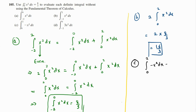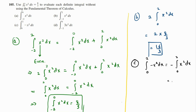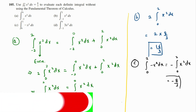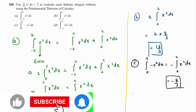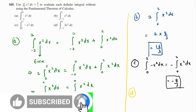For part c, we have the integral from zero to two of negative x squared dx. This is nothing but negative of the integral from zero to two of x squared dx. We already know that equals eight over three, so the answer becomes negative eight over three.